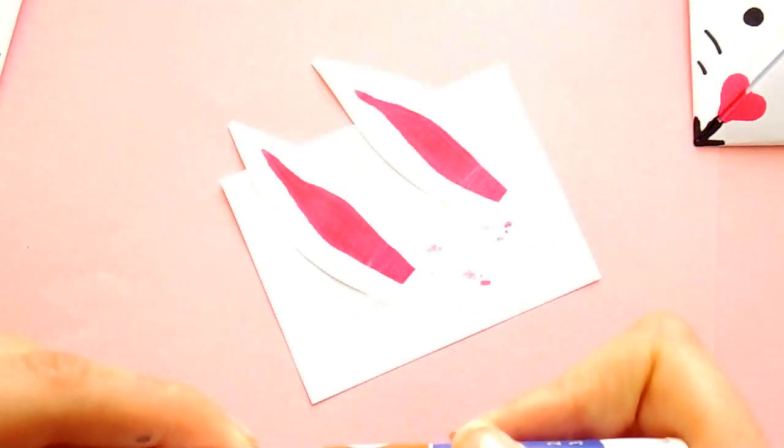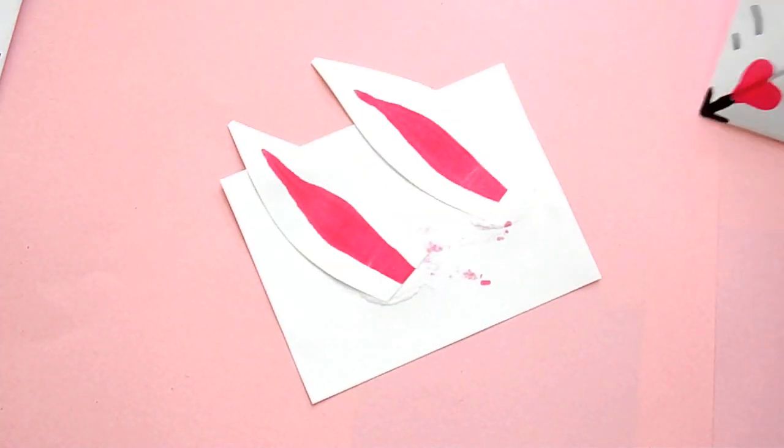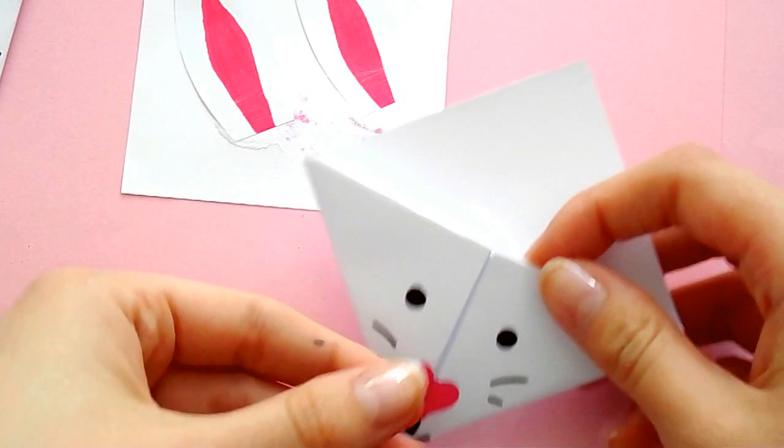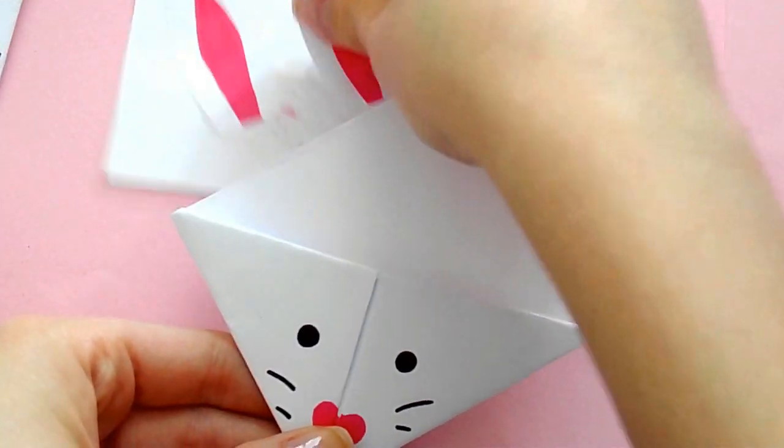So then take your ears and your bookmark and just stick these on behind the face in the pocket of the bookmark. Make sure they're really pressed down because you don't want these to fall off.